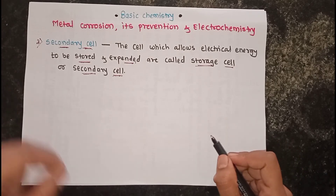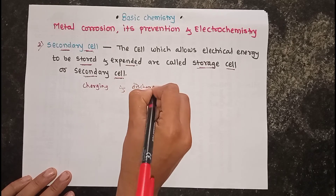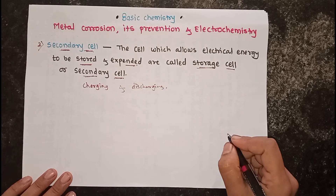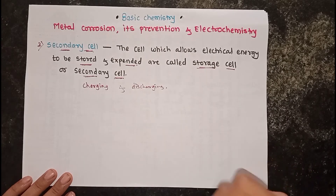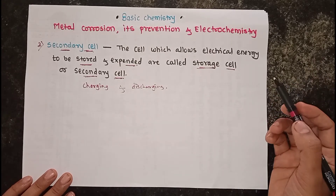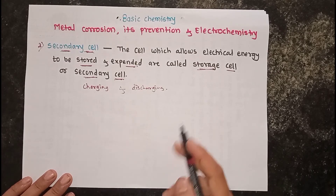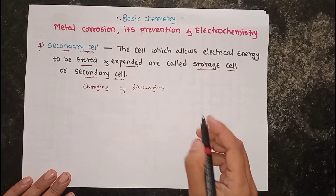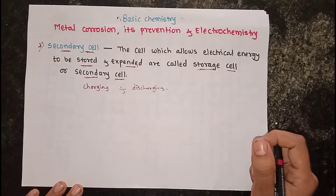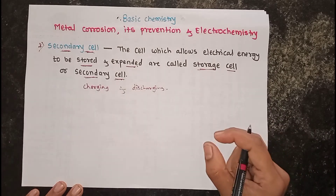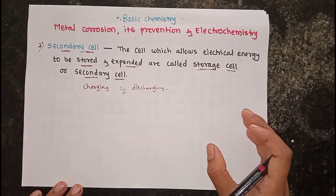This process of storing electrical energy in an accumulator is called charging. Secondary cells undergo both a charging and a discharging process — they first store electrical energy and then provide it. Storage cells are connected in series to make up a storage battery.